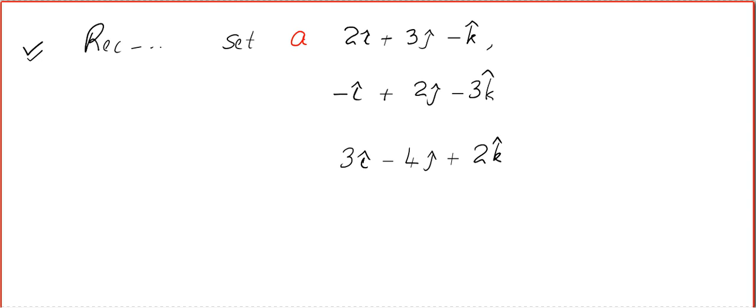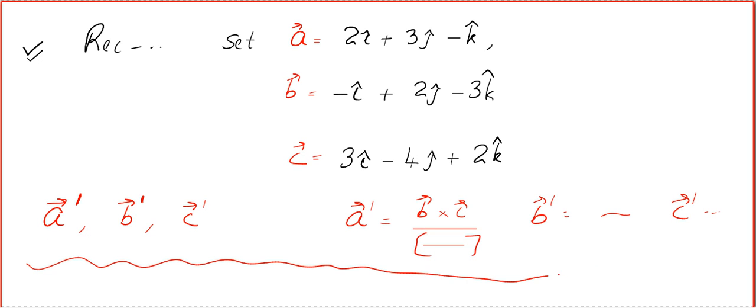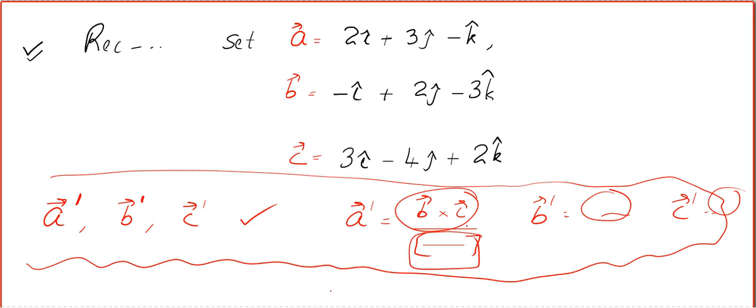The first thing you are going to do is call the vectors as A, B, and C. Let the required reciprocal system be A dash, B dash, and C dash, where A dash equals B cross C by STP. In examination, it is always good to write the definition, because in case there is any calculation mistake, at least you will get one mark for this.